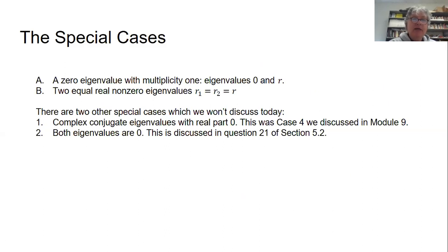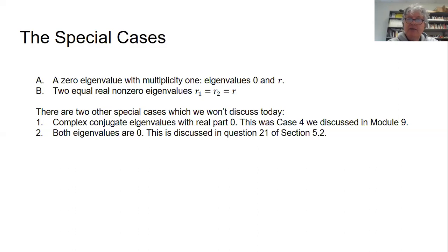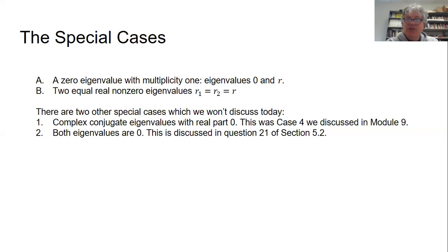The two cases we're going to look at today: first, a case where we have a zero eigenvalue with multiplicity 1, i.e. we've got two eigenvalues 0 and R, where R is not equal to 0. The other case is two equal real non-zero eigenvalues R1 and R2, both equal to some R. There are two other special cases we won't discuss today — one was case 4 of the last module (complex conjugate eigenvalues with real part 0), and the other is when both eigenvalues are 0, which you can explore in question 21 of this section.